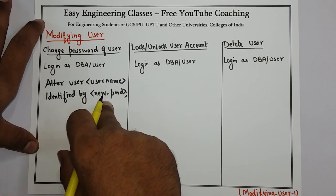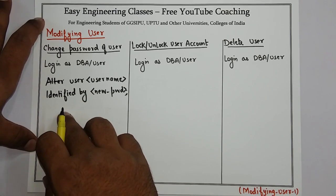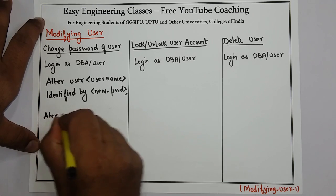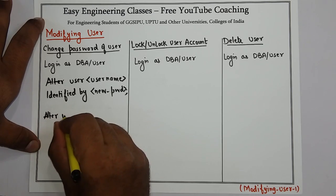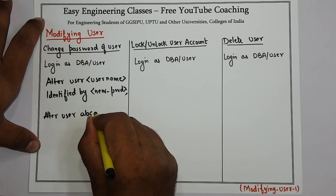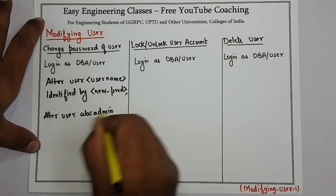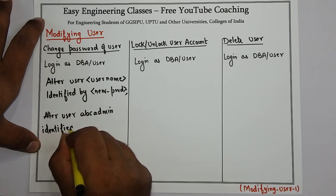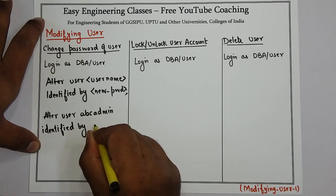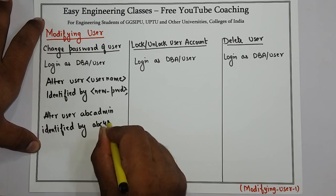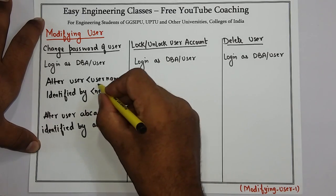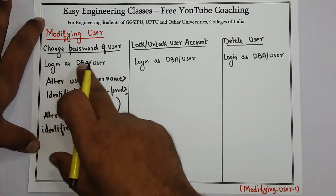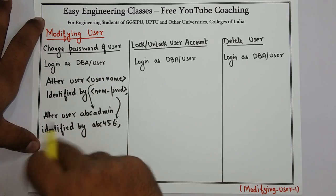After the username, write IDENTIFIED BY followed by the new password. For example, if I have to alter the user abcadmin, I will write: ALTER USER abcadmin IDENTIFIED BY abc456. Here the username is abcadmin and the new password is abc456. This is how you can change the password of a user.